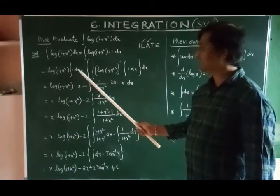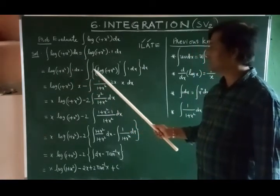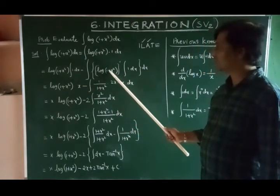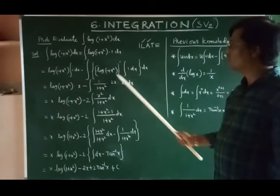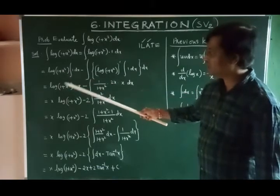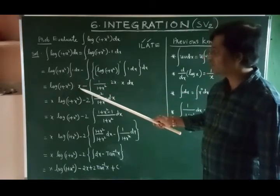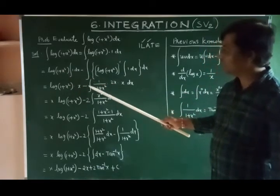First function integral second function dx minus overall integration, differentiation of first function integral second function dx, whole dx. Here, as it is written, integral 1 dx equals x minus overall integration.